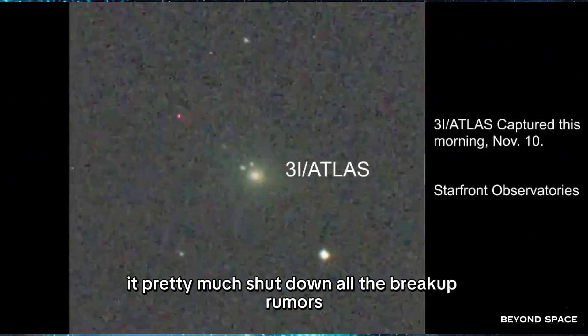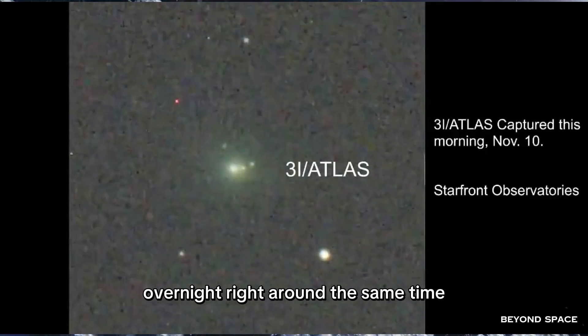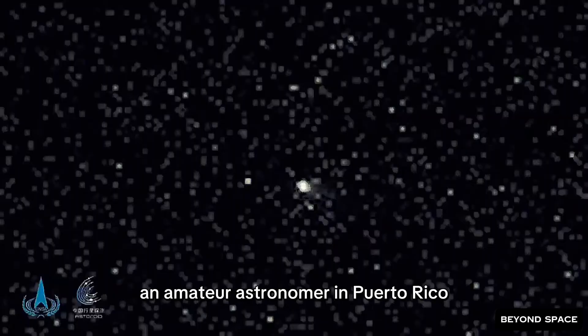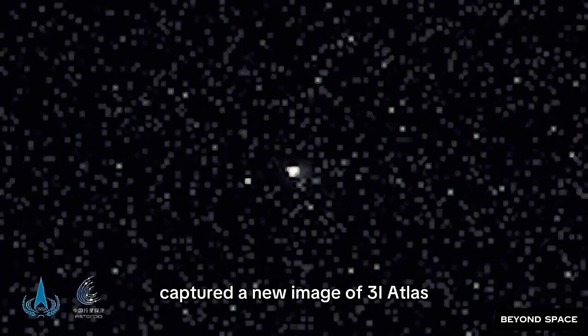Honestly, it pretty much shut down all the breakup rumors overnight. Right around the same time, something else interesting popped up. An amateur astronomer in Puerto Rico captured a new image of 3I Atlas, and it showed this subtle spiral pattern in the comet's tail.